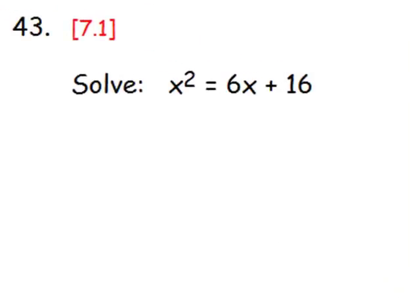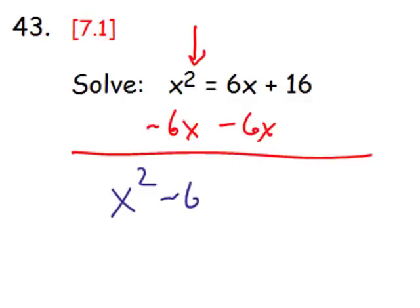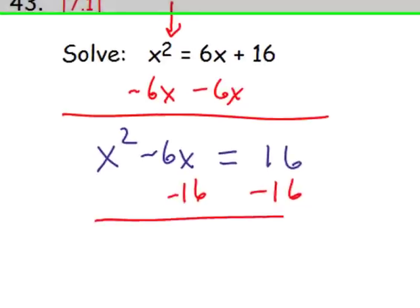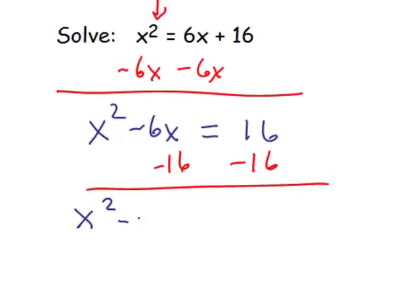Number 43. Again we have a quadratic equation because there's an x squared term, but this one is not yet set equal to 0. We must move the 6x and the 16 from the right side to the left side. First, subtract 6x from each side to get x squared minus 6x equals 16. Then subtract 16 from each side, putting terms in descending order: x squared minus 6x minus 16 equals 0.